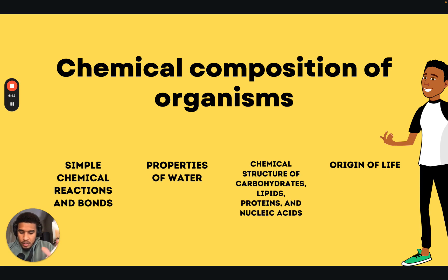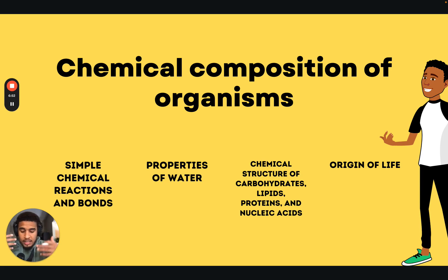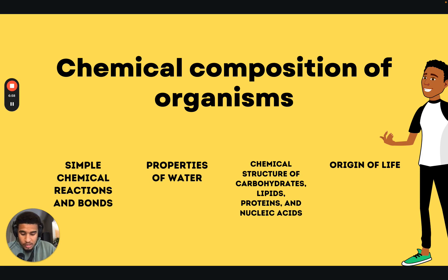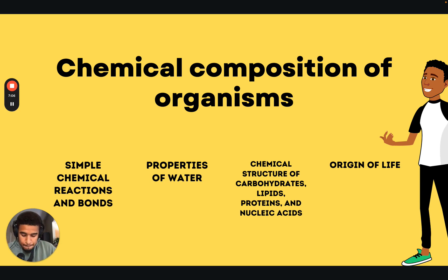Origins of life. You need to understand what abiogenesis is — chemical evolution. You need to understand the RNA world hypothesis, which is a hypothesis suggesting that ribonucleic acid played a very central role in the origin of life. You also need to understand what the hydrothermal vent hypothesis is, and what panspermia is. That covers chemical composition of organisms.